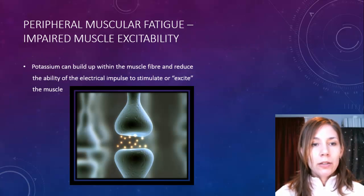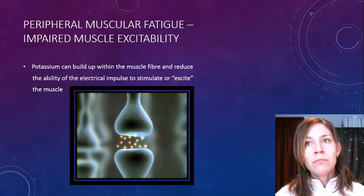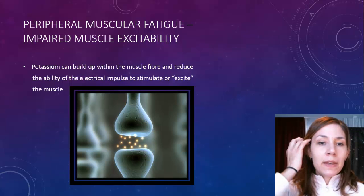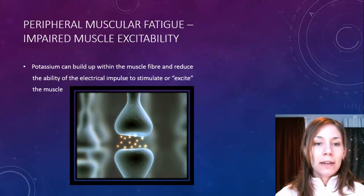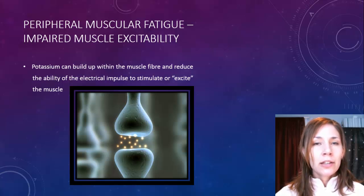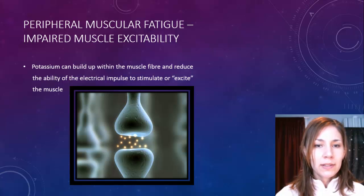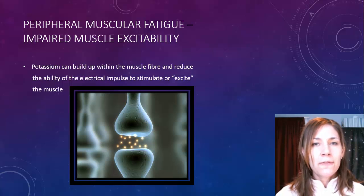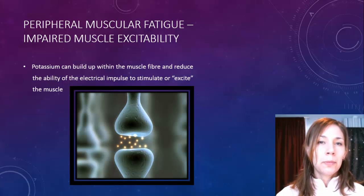Impaired muscle excitability basically means whether the muscle actually gets stimulated by the neuron or not. The chemical potassium can build up in the muscle fiber in the T-tubules, reducing the ability of electrical impulses to stimulate or excite the muscle. If potassium builds up, it clogs the tubules and stops messages from firing, so the muscle can't get stimulated and therefore can't contract properly.